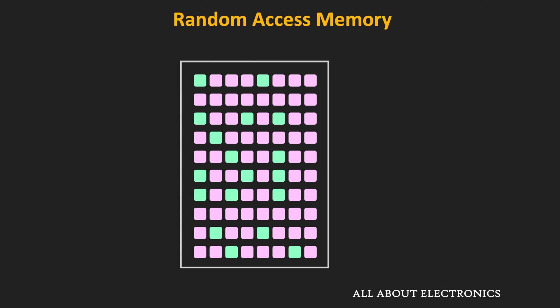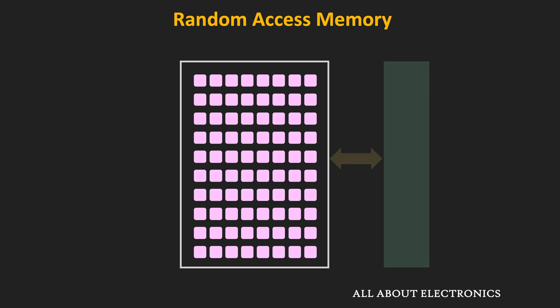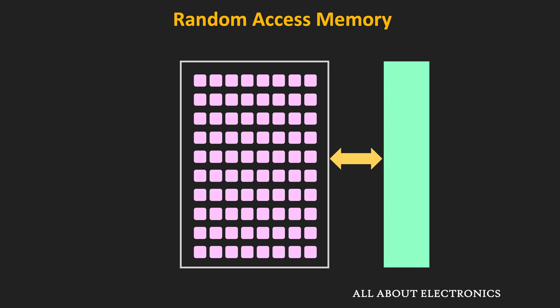So in this particular video, we will only talk about the RAM. Before we understand more about RAM, let us first understand some basic terminologies related to memories. In general, any memory unit is a collection of storage cells, and it also consists of digital circuits to transfer information in and out of the memory unit. Each storage cell in the memory stores 1 bit of information. Whenever information is stored or retrieved from memory, these operations are carried out in groups of bits, and this group of bits is known as a word.